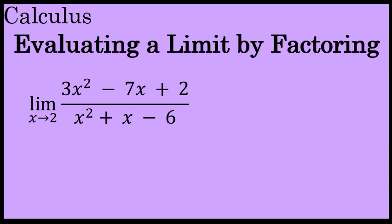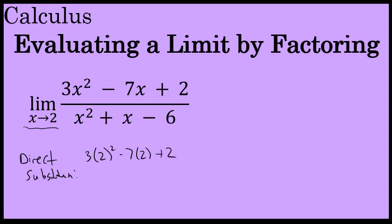In this problem, we will evaluate the limit as x approaches 2 of 3x squared minus 7x plus 2 over x squared plus x minus 6. When evaluating a limit, your first line of defense, or the first thing you could try, is direct substitution. I'll substitute 2 for every occurrence of x and see if I get a real number back. If direct substitution yields a value when finding the limit of a rational function like this, that value would be the limit.